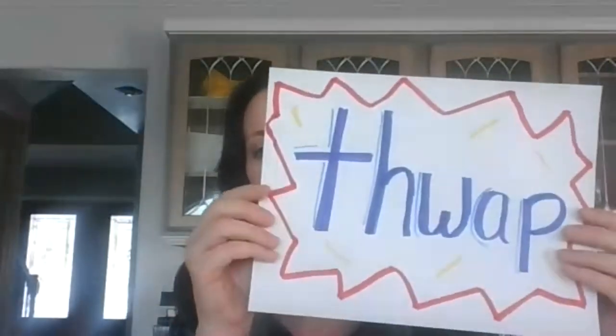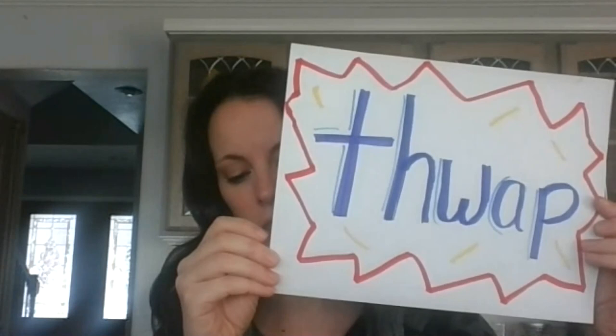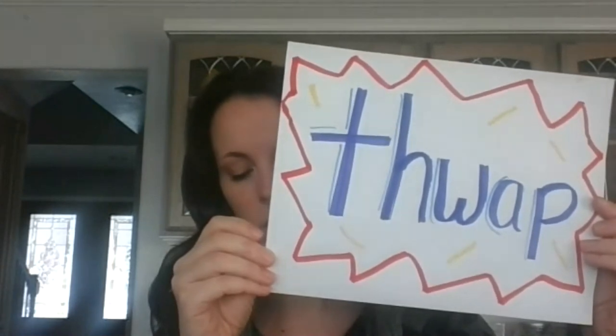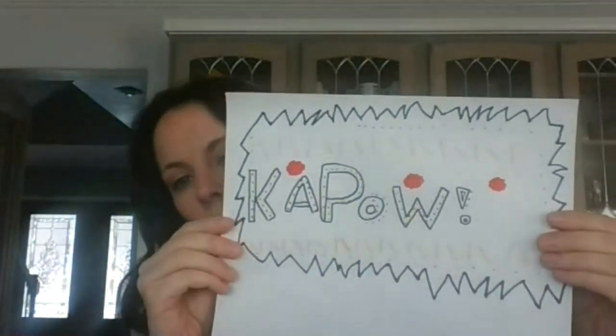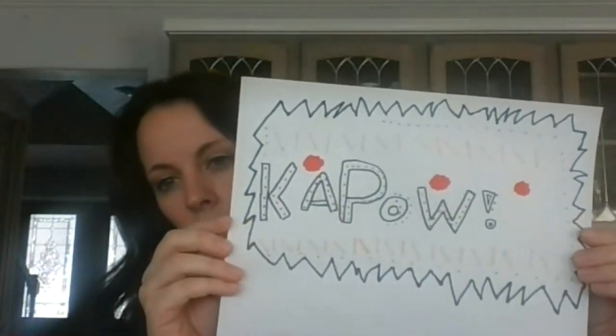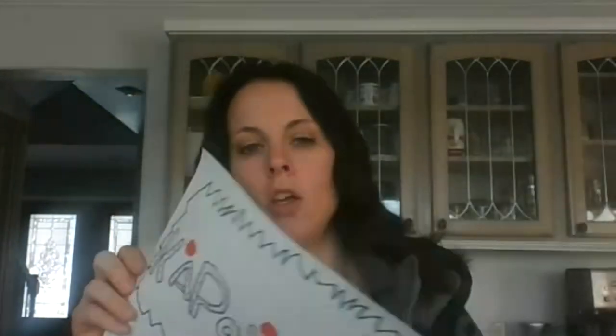For example, I chose the word splat as one of my onomatopoeias and drew it out like this. And Reagan chose Kapow as an onomatopoeia she liked and drew it out like that.